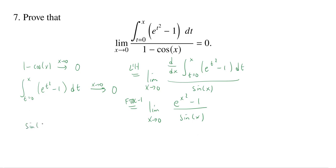Sine of x as x goes to 0 goes to 0. What about the top? E to the x squared minus 1 as x goes to 0: you get e to the 0, which is 1, minus 1 is 0. Oh, it's the same thing again: 0 over 0.